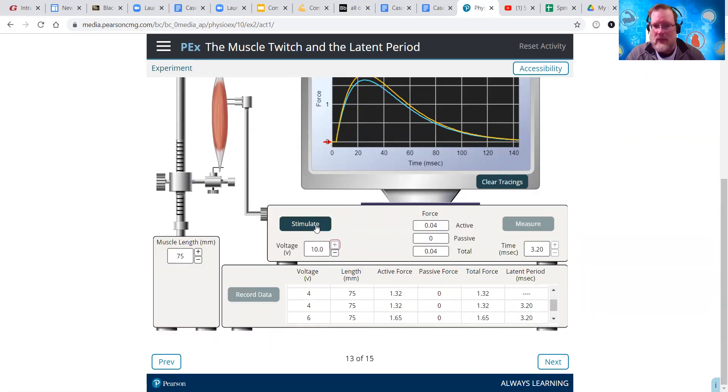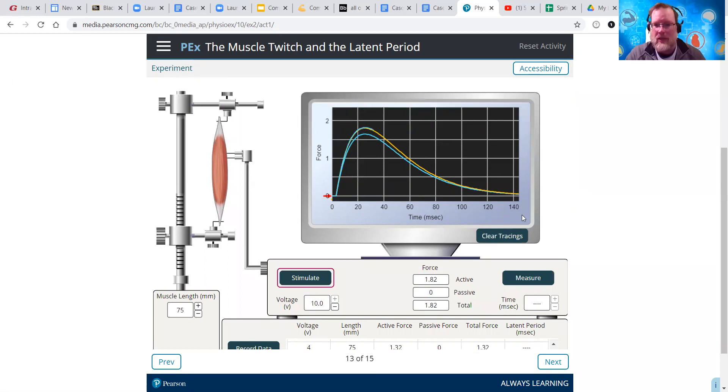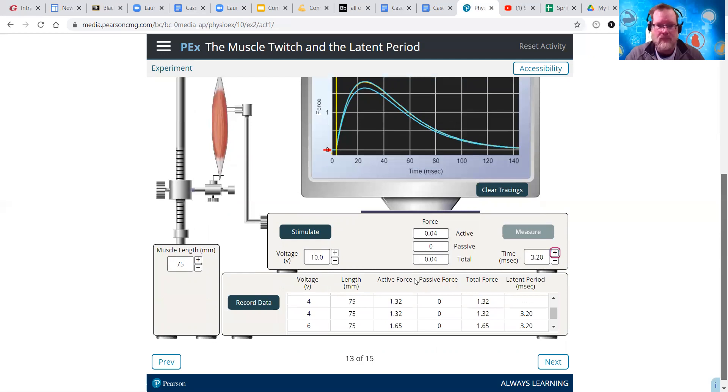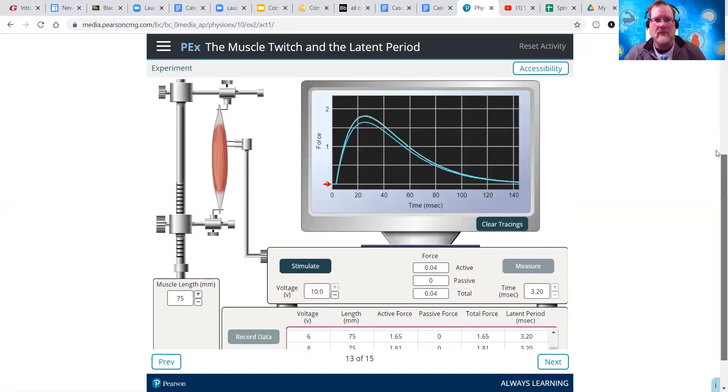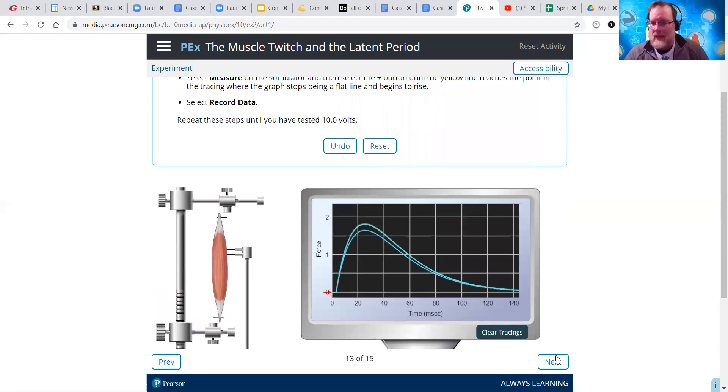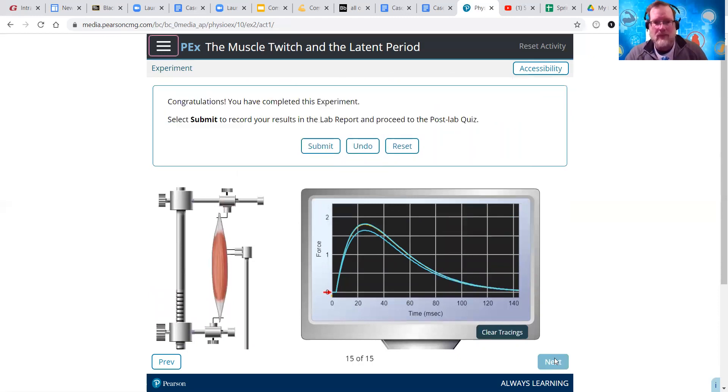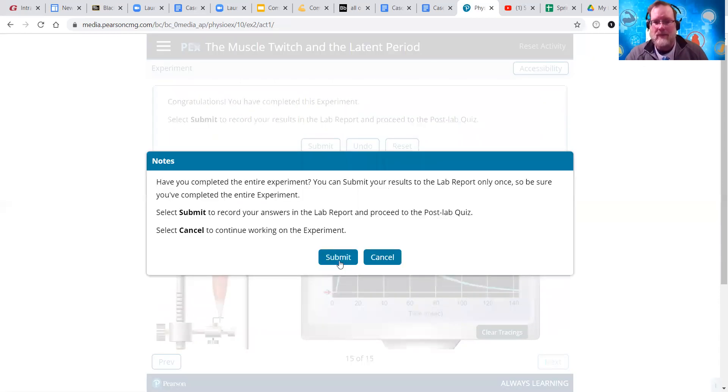And then one last time we go to 10, we'll click stimulate. And sure enough, it looks like that latent period is just about the same. So, let's find out if it is. And there we go, 3.2. And click record data. Scroll down. We have our 4, 6, 8, and 10. We have the latent periods being the same. And that's it. And then click next. It'll ask you a couple things. You want to hit submit, of course. And submit again.